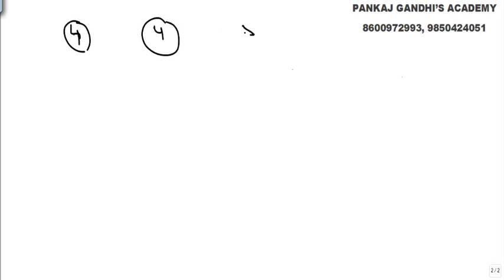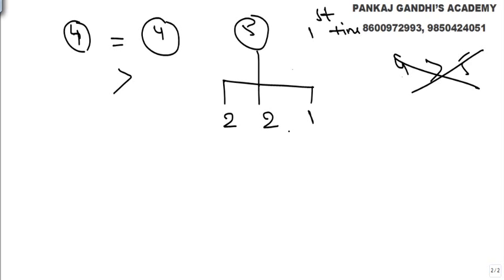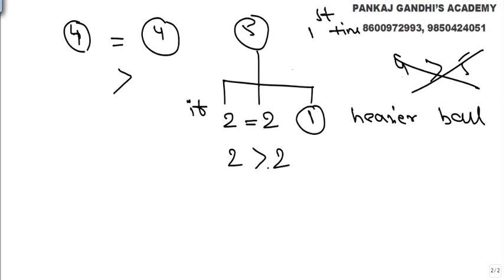With 13 balls: one group of 4 this side, 4 this side, and 5 aside. We compare the two groups of 4. If they are equal, the group of 5 contains the heavier ball. That's the first use of the balance. Now 5 is not divisible by 3, so we make groups of 2, 2, and 1. If those two groups of 2 happen to be equal, then the single ball is the heavier one — that's fortunate.